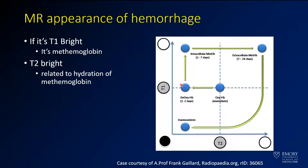As that deoxyhemoglobin is converted to methemoglobin, it gets bright on T1. This is the classic T1 brightness, occurring roughly from day 2 to 28 days — about a day to a month. Over time, that hemoglobin gets hydrated and becomes progressively more T2 bright. In a very delayed phase, it's going to gradually become dark on everything — you get the hemosiderin phase at the end, which is dark on both T1 and T2.